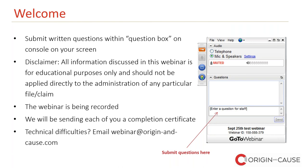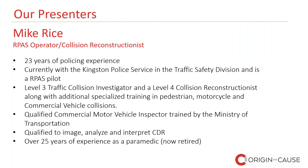At the end of the webinar, when you close the window, you'll be prompted to answer a few quick questions. We would love to get your feedback, so if you have two minutes, please fill out that survey. If you're experiencing any technical difficulties, you can email webinar@origin-and-cause.com or type a question in the questions dropdown. We've got two webinars today — after this, we're going to be doing a webinar on staircase instruction and slip and fall accidents at 2:15.